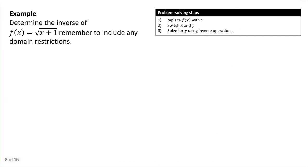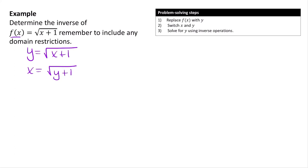Now let's find the inverse of this function. We start by replacing f(x) with y, so we have y = √(x + 1). The next step is to switch x and y, giving us x = √(y + 1). Now we work on getting y by itself by undoing that square root — we square both sides. When we square both sides we get x², and the square root goes away, leaving us with y + 1.